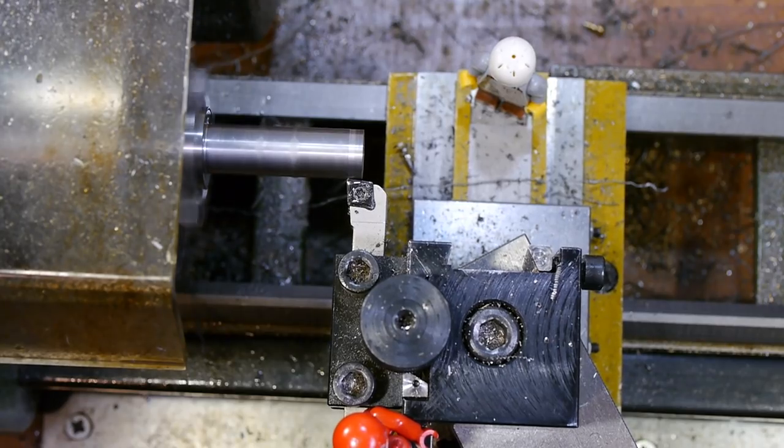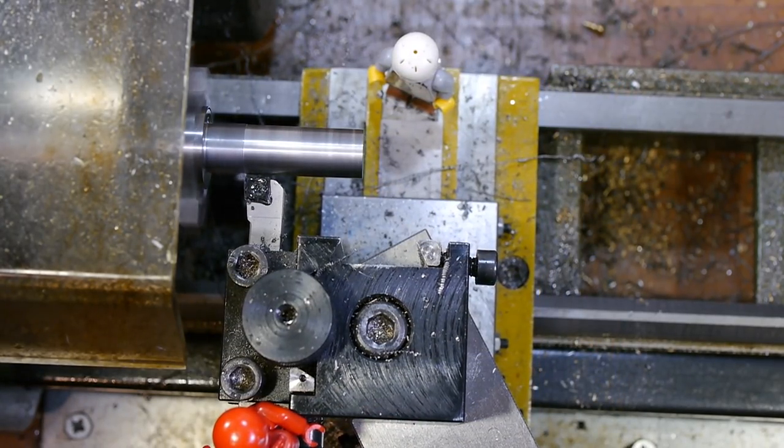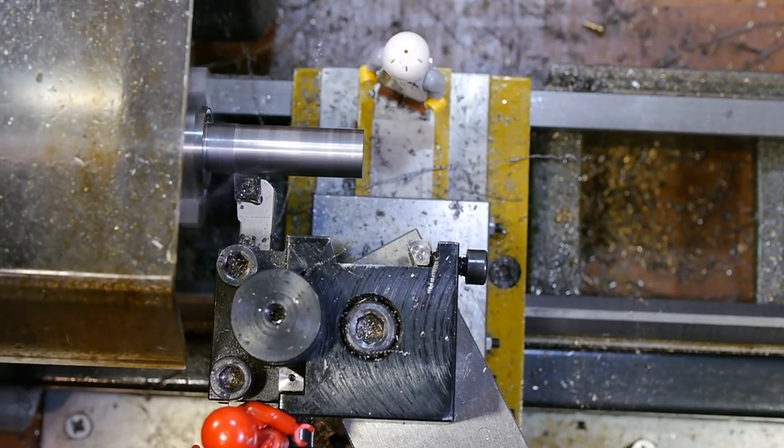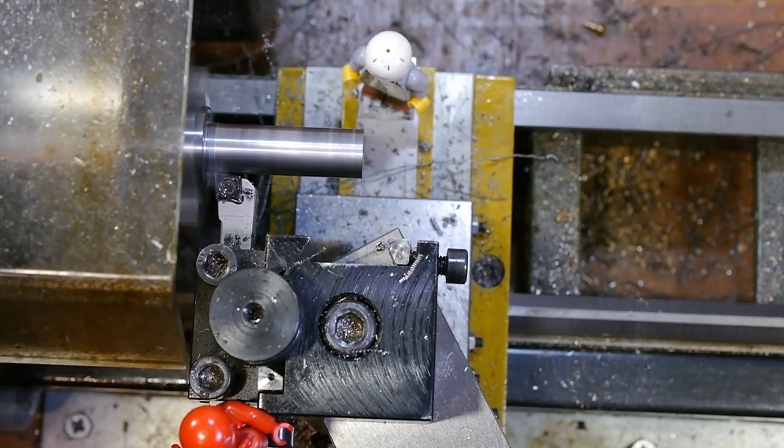The final few passes were much shallower. I do this because deep cuts have high cutting forces, which causes the part to flex, and means the resulting diameter has a slight taper. Light cuts up to the final dimension keep the taper to a minimum.